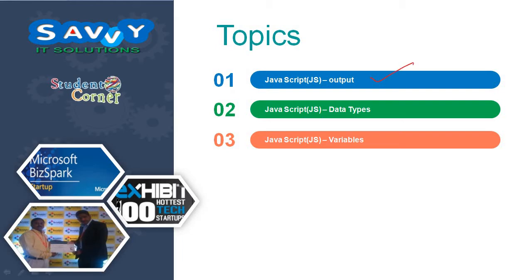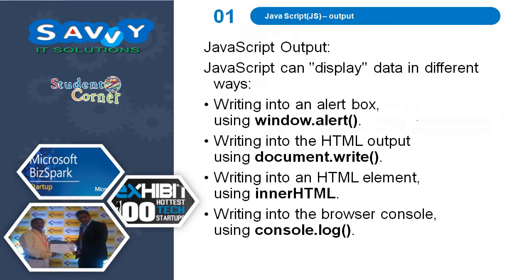Initially we need to discuss output, next data types, and furtherly variables are discussed. JavaScript output can display data in different ways: writing into an alert box using window.alert, writing into the HTML output using document.write, writing into an HTML element using innerHTML, and writing into the browser console using console.log. These are the 4 different types of output statements available in JavaScript.